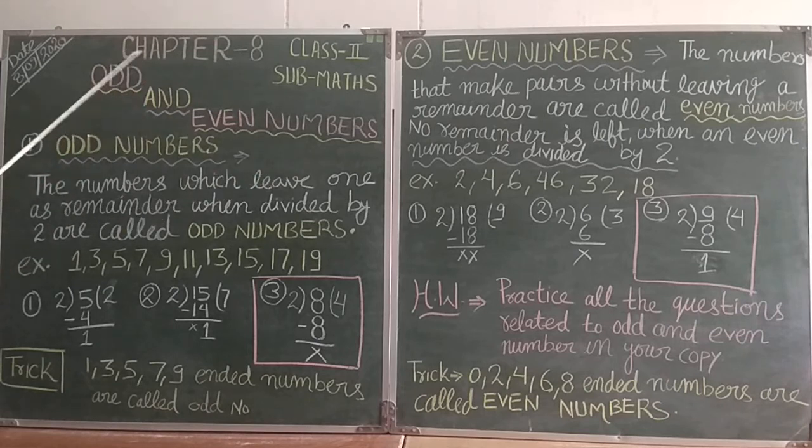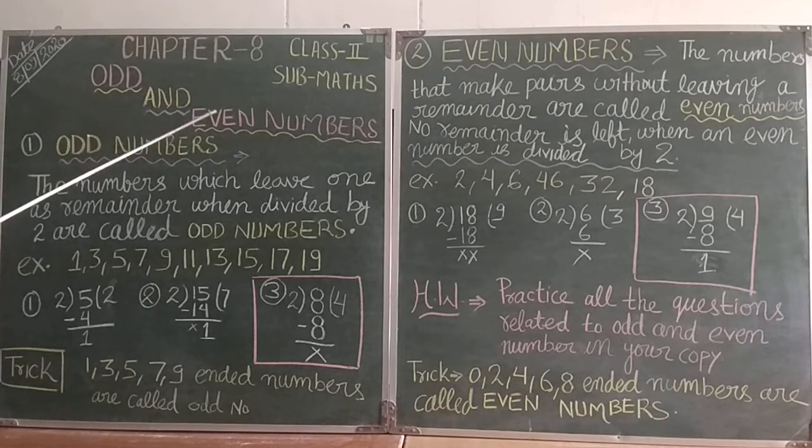So first question is what is odd and even numbers means? Odd and even numbers means sum or the sum. Odd means the sum or even means sum. Now we will learn about sum or and even numbers, okay?